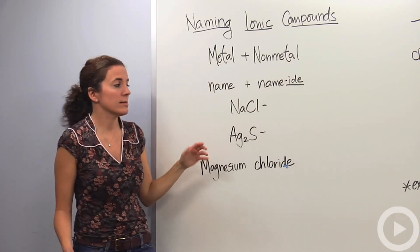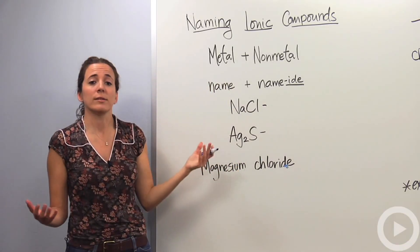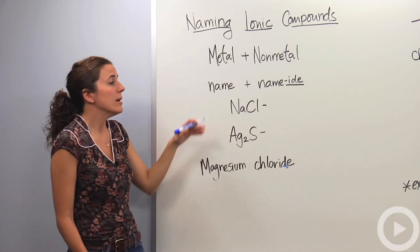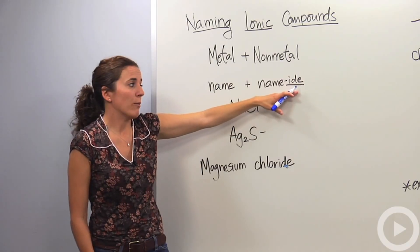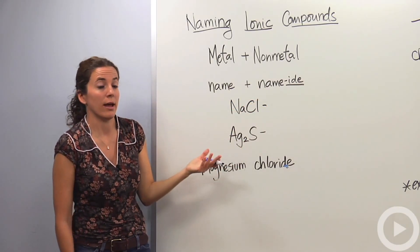So how do we name these? Our metals are just going to give us their name. We're going to name the metals the same name as they have in the periodic table. The non-metals, we're going to change their last name. We're going to drop their last syllable and just add -ide to show that they've been changed to an anion.